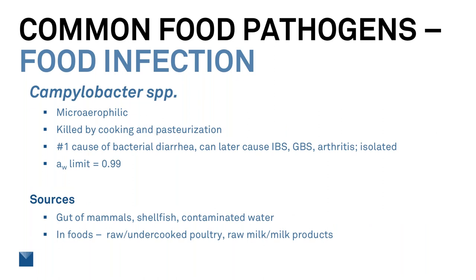Campylobacter is microaerophilic — it requires oxygen, but less than atmospheric levels. It can be killed by cooking and pasteurization. It is the number one cause of bacterial diarrhea, also known as traveler's diarrhea. It can cause longer-term issues like IBS, GBS, or arthritis. It's generally isolated in the gut of mammals, shellfish, and contaminated water. In foods: raw and undercooked poultry, raw milk, and milk products.